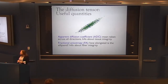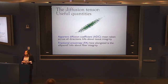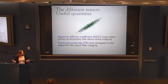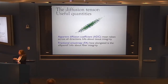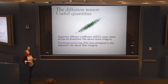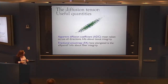Fractional anisotropy is one of the most commonly used measurements extracted from the tensor. It describes how elongated the ellipsoid is — roughly how much stronger the tendency to diffuse along the principal direction compared to other directions. This tells us about fiber integrity.